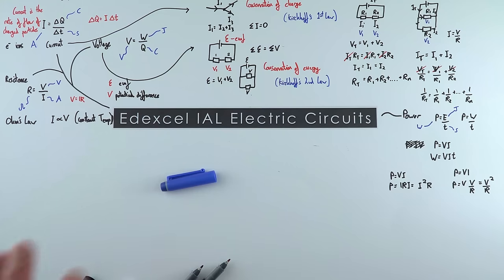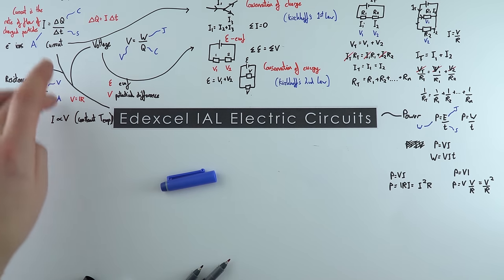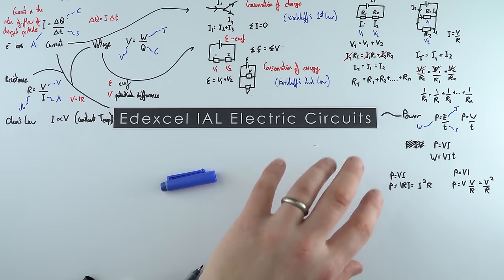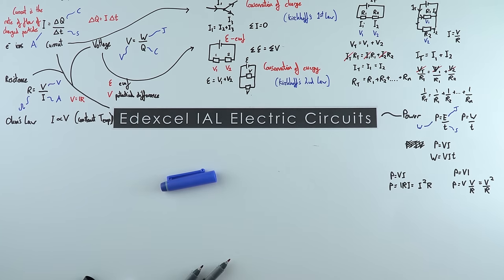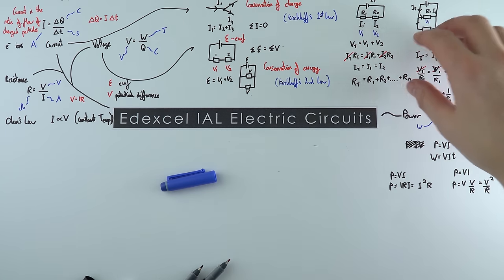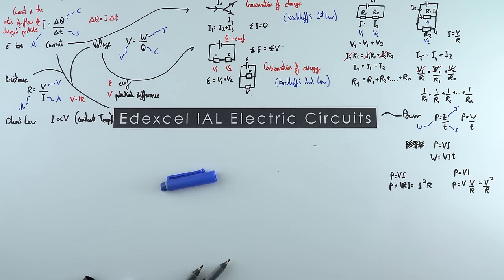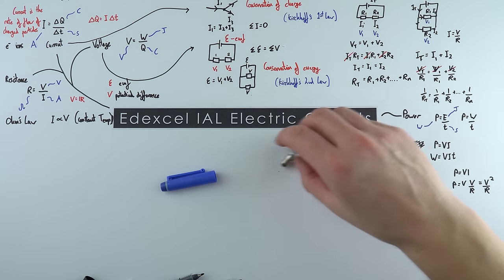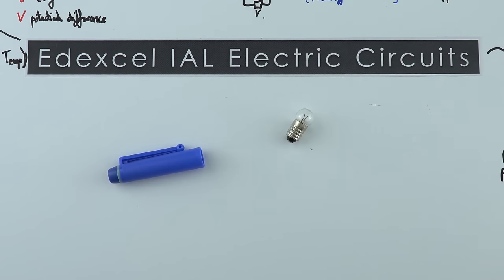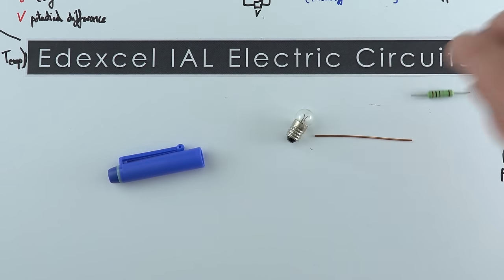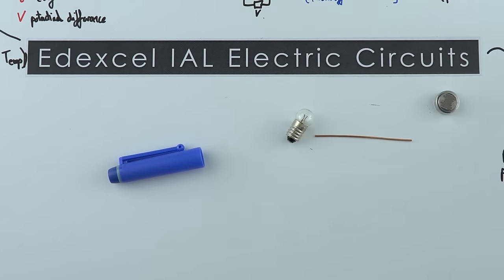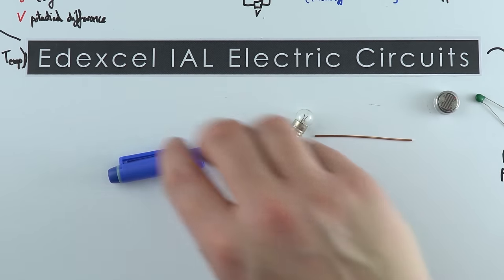There are lots of different equations and the more questions you do, the better you'll get at choosing the right one for the scenario. Now let's look at some actual components — filament bulbs, bits of wire, resistors and so on — and how you can test their properties.